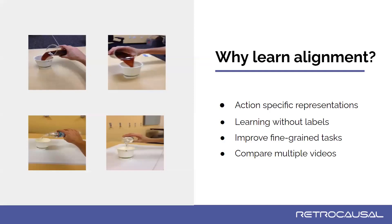Our goal is to learn fine-grained representations for videos in a self-supervised manner, and we achieve this using alignment as a pretext task. Learning association between frames with varied viewpoints and scenes allows us to learn action-specific representations without any cost of labeling. These representations can be used for multiple downstream tasks including video alignment, phase classification, and frame retrieval. We also show that these representations help learning under label-scarce settings.